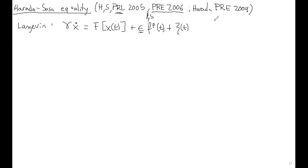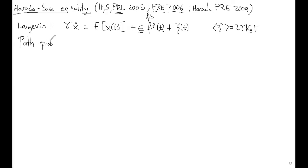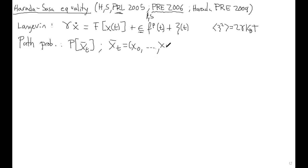The noise has zero mean and an autocorrelation given by 2 gamma k_B T times a delta function. What is the path probability — the probability for a trajectory in this model? The path probability, which I call P of x(t) — the probability for any trajectory x(0) up to x(T), assuming time is continuous. What is the path probability?